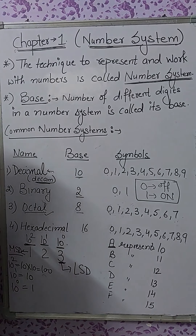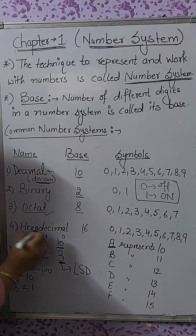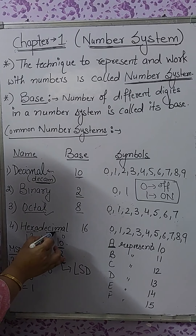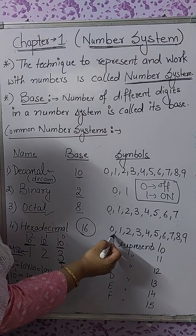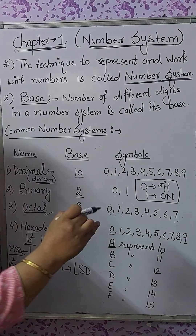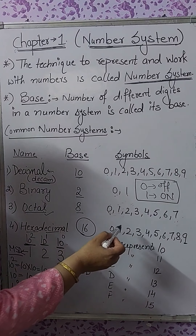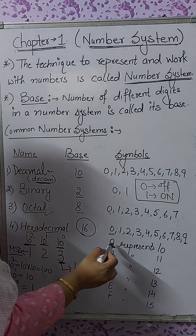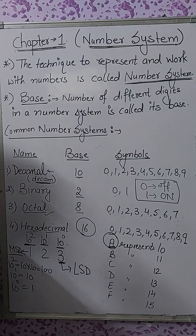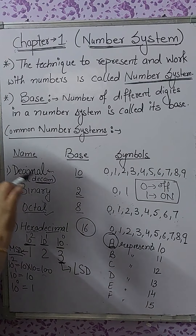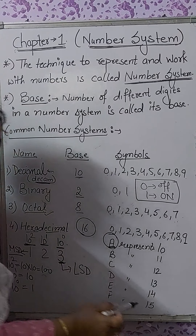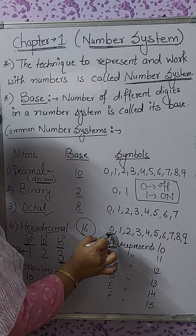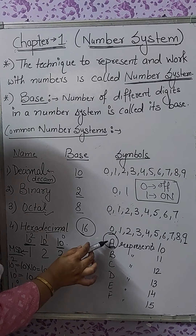Next is the hexadecimal number system. 'Hexa' means 6 and 'decimal' means 10, so hexadecimal means 16. It has a base of 16 and 16 different digits. The first 10 digits are 0 to 9. Since you cannot use 10 as a single digit, capital A represents 10, capital B represents 11, C represents 12, D represents 13, E represents 14, and F represents 15. So it has 16 different digits: 0 to 9, and A to F which represent 10 to 15. You must use capital letters.